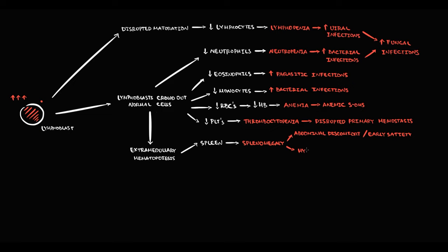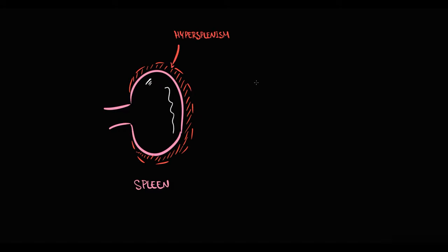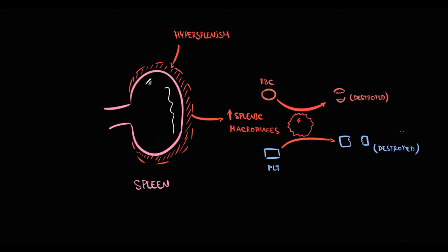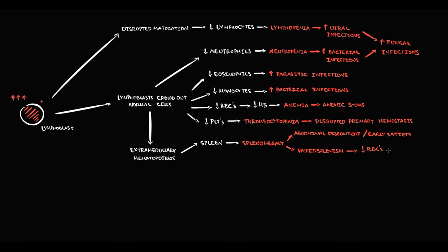Another serious problem is hypersplenism: as the spleen becomes very large, splenic macrophages become over-stimulated and begin to destroy normal red blood cells and platelets by phagocytosis. The more severe acute leukemia becomes, the larger the spleen, and the higher the chance that splenic macrophages will cause rapid and premature destruction of red blood cells and platelets. Hypersplenism therefore aggravates the anemia and thrombocytopenia already present.